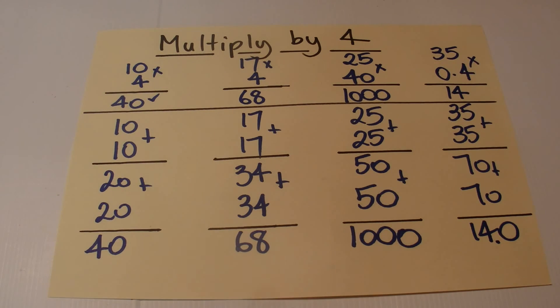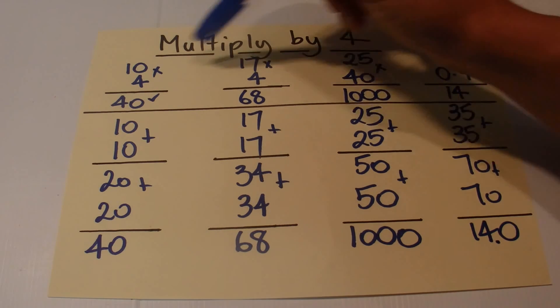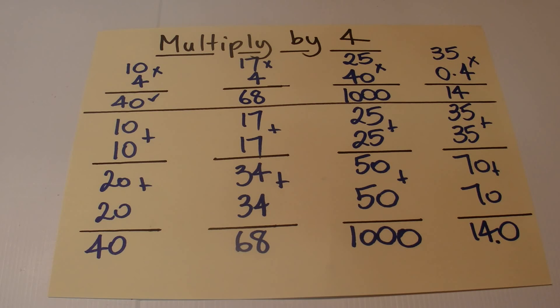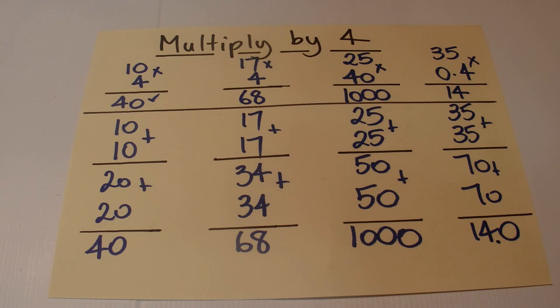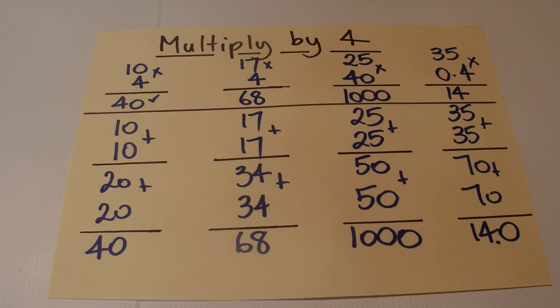So there we go, simple trick. All those calculations you can do in your head that allows you to multiply by 4 by taking the number, doubling it once, and doubling it again to come up with the correct answer. Thanks for watching, hope you've enjoyed this video. Bye for now.